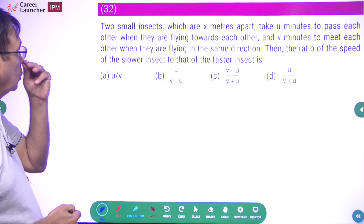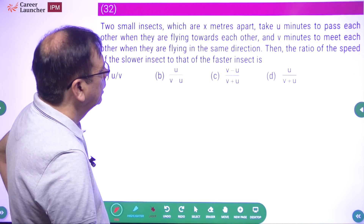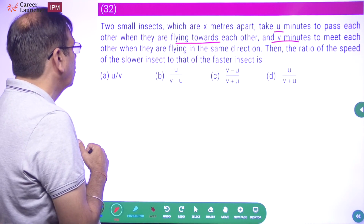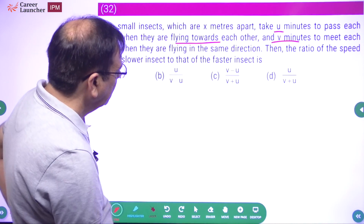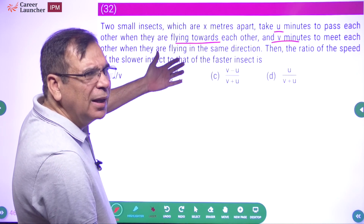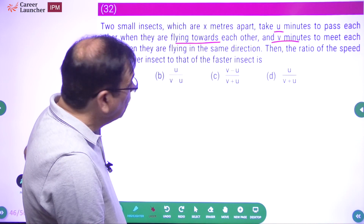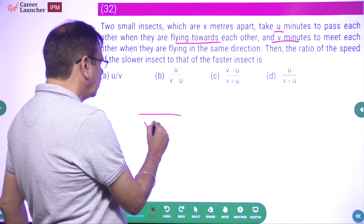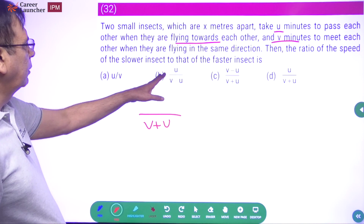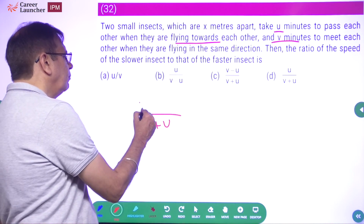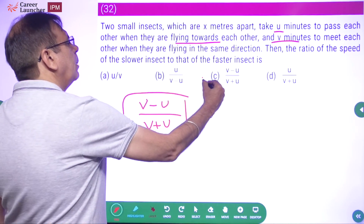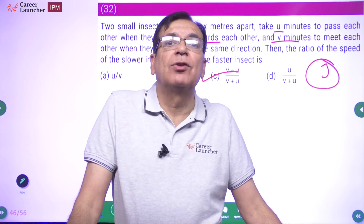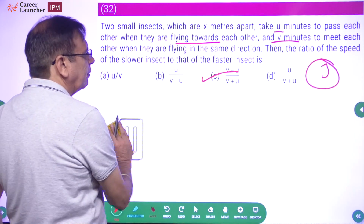Two small insects which are x meters apart take u minutes to pass each other when flying towards each other, and v minus u to meet each other when flying in the same direction. What is the ratio of the speed of the slower insect to the faster insect? This is essentially a trains question — they just said insect instead. Treat it like a trains or boats-and-stream question. If you remember your train concept, this is a straightforward question.